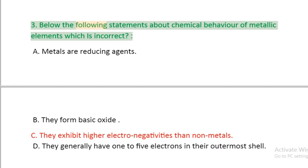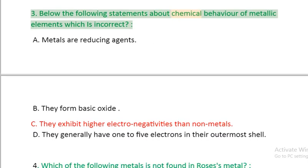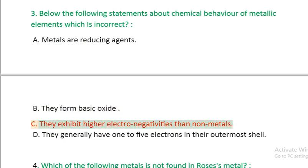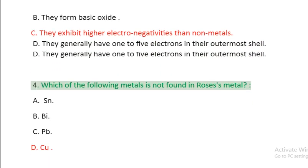Question 3: Below the following statements about chemical behavior of metallic elements which is incorrect: A. Metals are reducing agents, B. They form basic oxide, C. They exhibit higher electronegativities than non-metals, D. They generally have 1 to 5 electrons in their outermost shell.